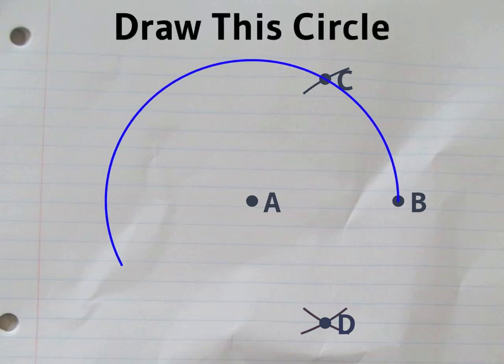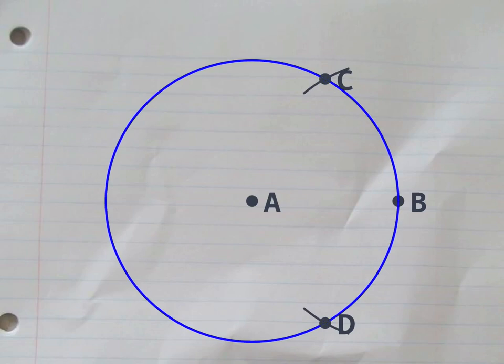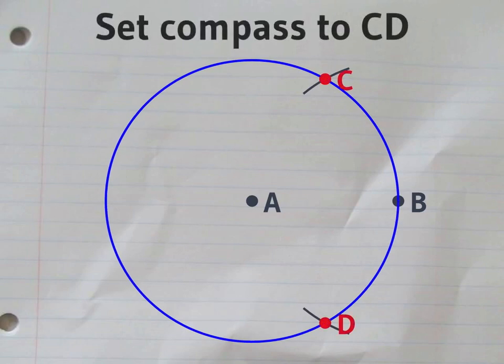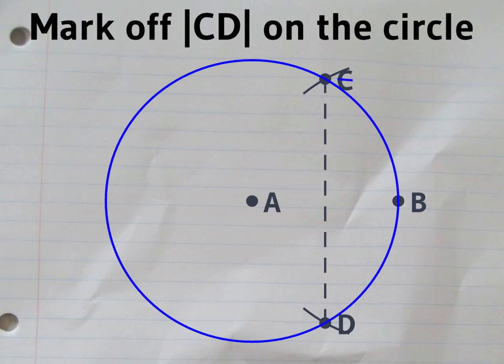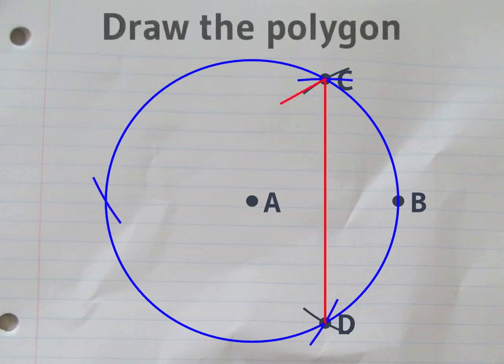Now draw the circle centered on A, again with radius AB. The distance between C and D is exactly the right length to be the edges of the equilateral triangle.